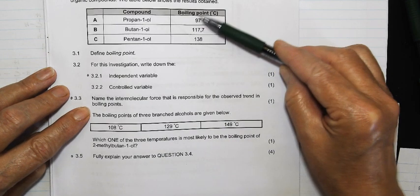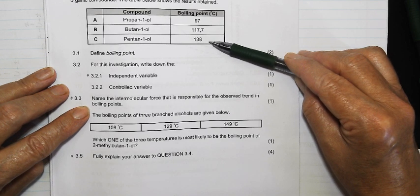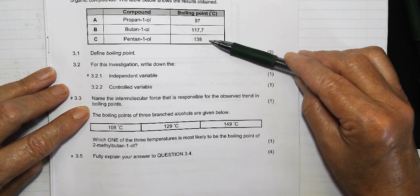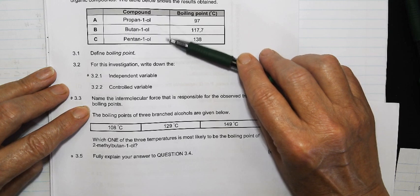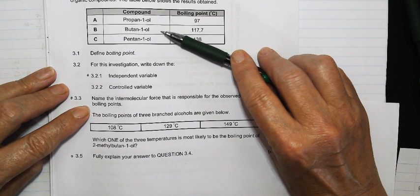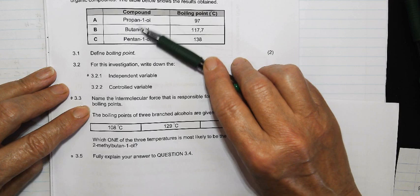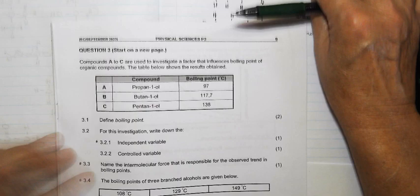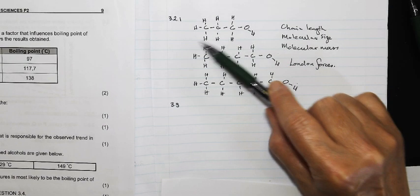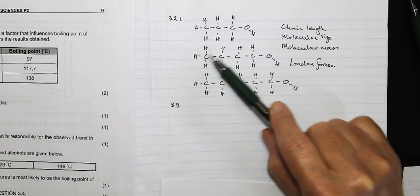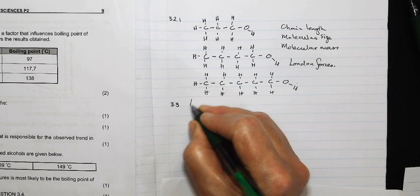Now propanol has the weakest intermolecular forces where pentanol has the strongest intermolecular forces according to the trend in the boiling points. Although all three molecules will have special dipole-dipole forces called hydrogen bonds between them, the strength in the hydrogen bonds are not changing in the molecules. But as the molecule becomes longer and longer, the strength of the London forces becomes greater and greater. So it's the London forces become stronger as the nonpolar part of the molecule becomes bigger. So question 3.3 the answer is London forces.